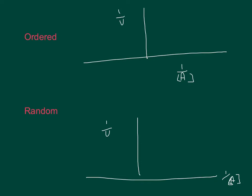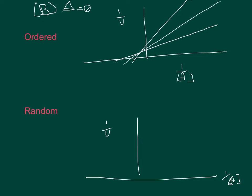The way you can tell the difference with a single displacement — whether it's random or ordered — is by looking at the double reciprocal plot. If you keep the concentration of B constant and change the concentration of A, you end up with graphs where the lines have an intersection point somewhere in the first quadrant. It's not on the Y-intercept and not on the X-intercept, but somewhere in the first quadrant of the graph.